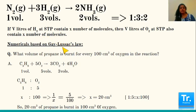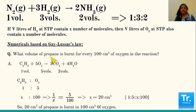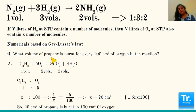Now for numericals based on Gay-Lussac's law. First question: what volume of propane is burnt for every 100 cm³ of oxygen? Propane is an organic compound. Any organic compound reacting with oxygen gives carbon dioxide, water, and heat — this is combustion. We will cover writing organic formulas in detail when we do organic chemistry, but the equation for propane is provided.